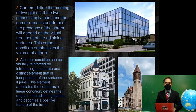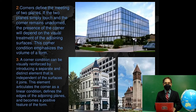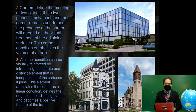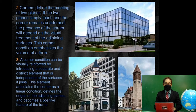Corners define the meeting of two planes. If the two planes simply touch and the corner remains unadorned, the presence of the corner will depend on the visual treatment of the adjoining surfaces. This corner condition emphasizes the volume of form. What we are looking at here is the corner of a building — in every design, the corner should look good, which is why we are discussing the articulation of corners.